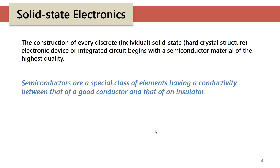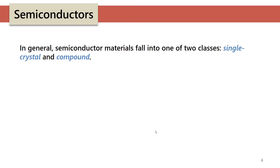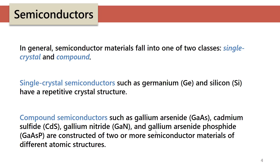The construction of every discrete solid-state electronic device or IC begins with a semiconductor material of the highest quality. Semiconductors are a special class of elements with conductivity between a good conductor and an insulator. Most commonly, semiconductors have four electrons in their valence shell. Broadly, semiconductor material can be of two classes: single crystal semiconductor or compound semiconductor. For a normal junction diode, you would use silicon or germanium.